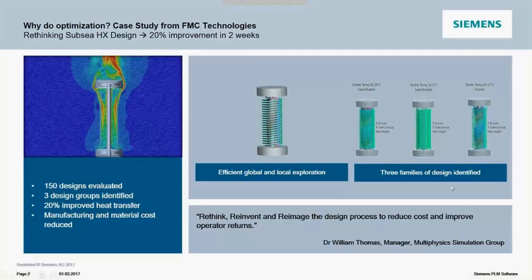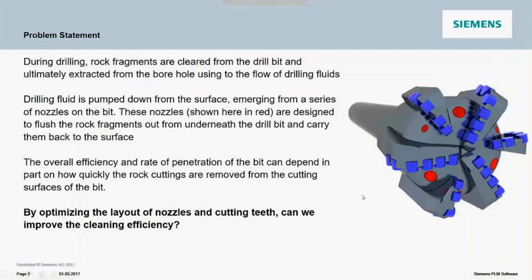I'm going to show a demonstration using a drill bit example — a fairly straightforward CFD simulation. During the drilling process, rock fragments cut away from the rock face by the teeth are cleared from the bottom of the drill bit and extracted from the borehole using drilling fluids, which are pumped down the drill string and emerge from the red nozzles. The positioning of these nozzles is quite critical in terms of the cleaning efficiency of the bit — how effectively rock fragments are removed from where cutting is taking place. The efficiency of the drilling process and rate of penetration can depend on exactly how well that happens.